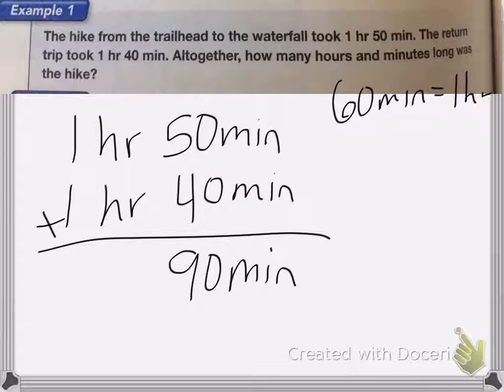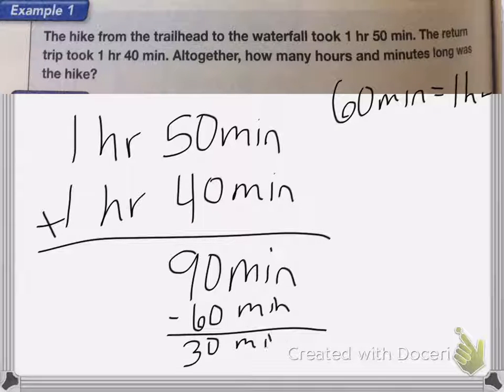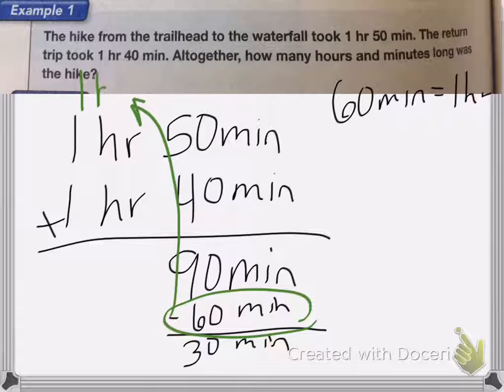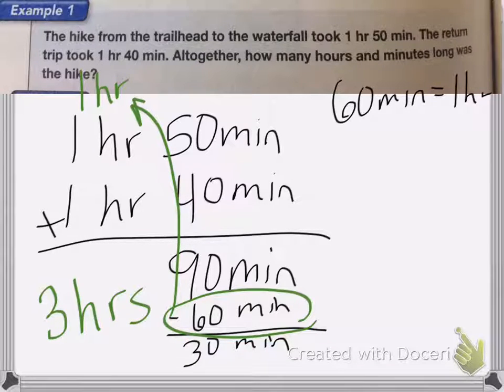So to figure out what I have left, I'm going to subtract 60 minutes from my 90. And I end up with 30 minutes left. That 60 minutes that I took away, I'm going to move it up to the hour spot. I'm going to add another hour. So I end up with one plus one plus one is three. So I end up with three hours and 30 minutes.